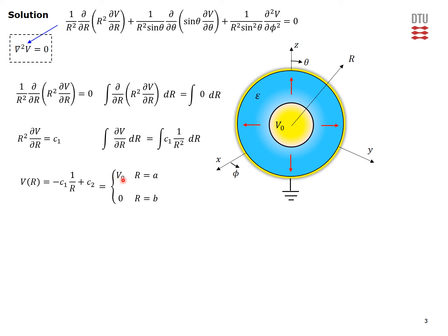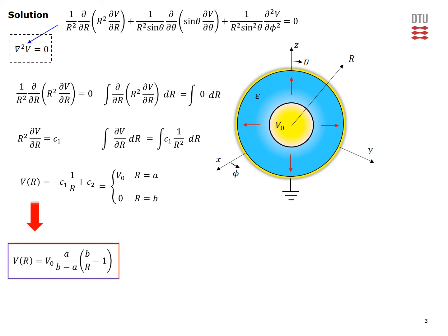These two constants are determined using boundary conditions. The potential must recover the specified value V0 at the surface of the inner conductor, i.e., at r equal to A. And at r equal to B, the potential must equal zero because the outer conductor is grounded. These two boundary conditions give two equations in two unknowns, easily solved for C1 and C2, which are then substituted back to give the final expression for the potential as a function of r in the spherical capacitor.